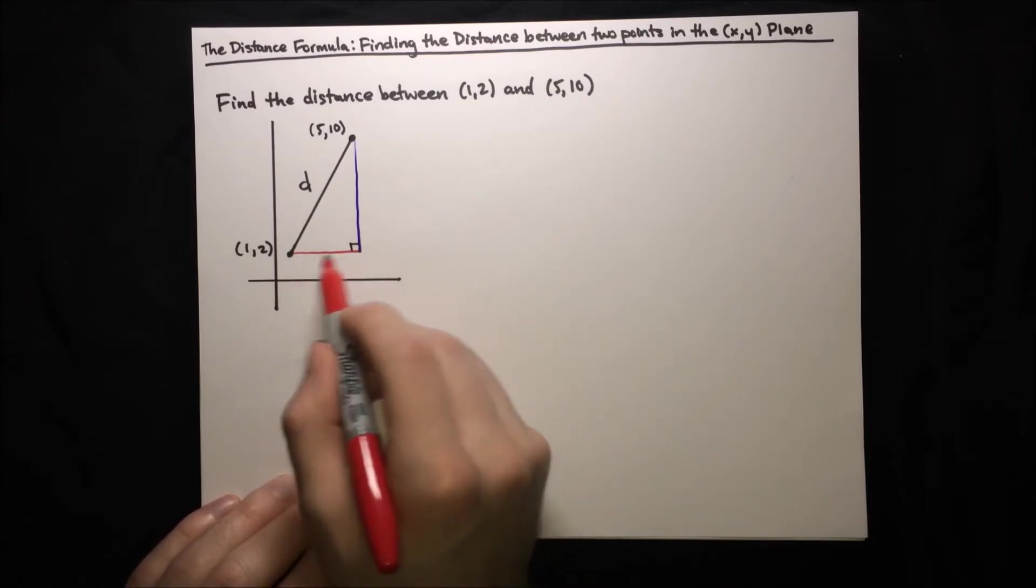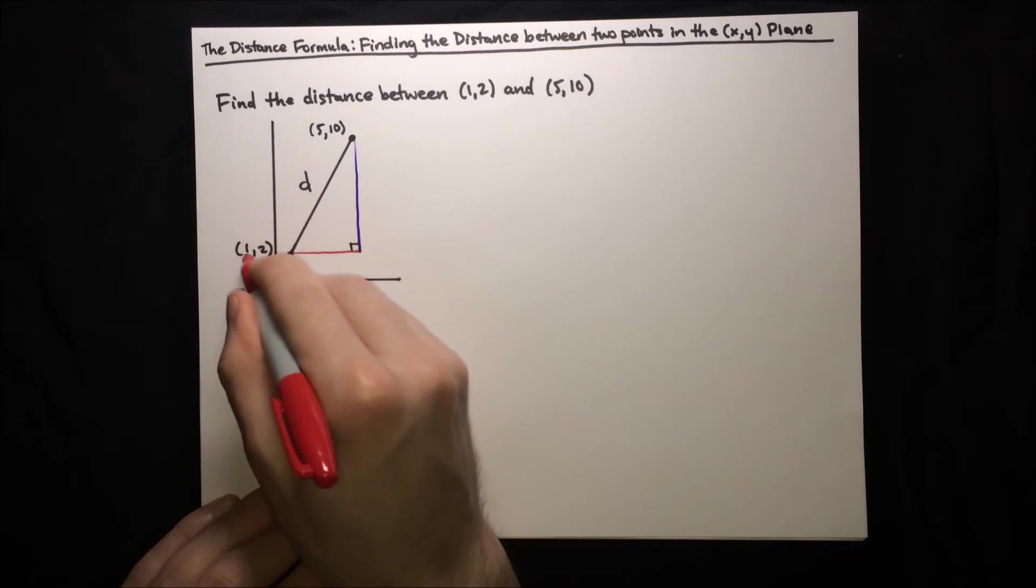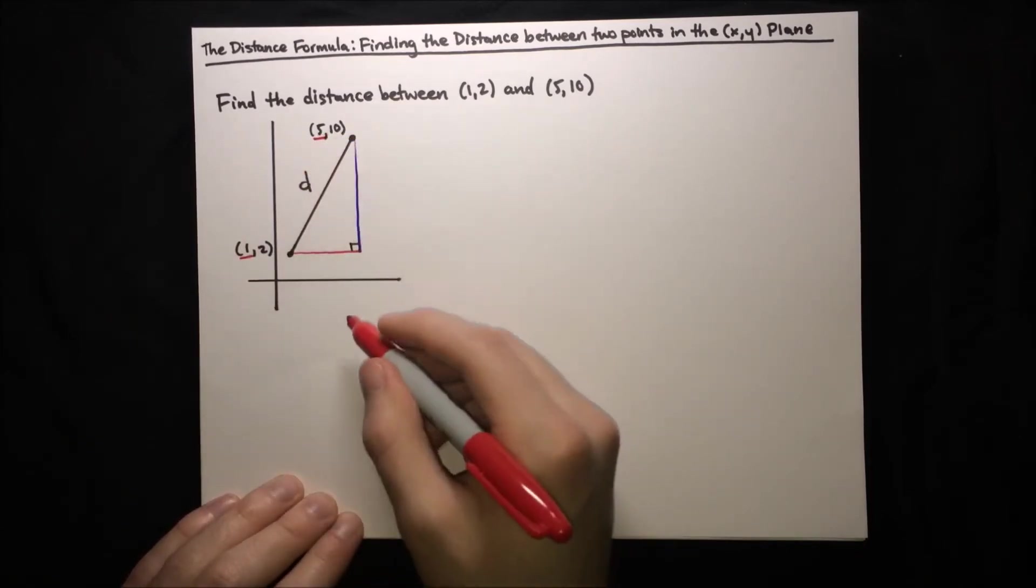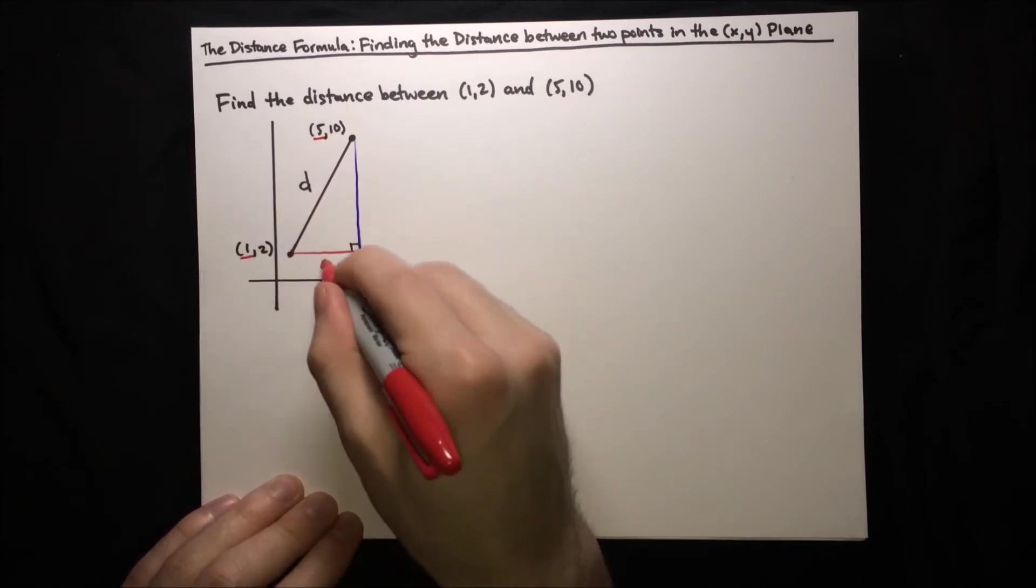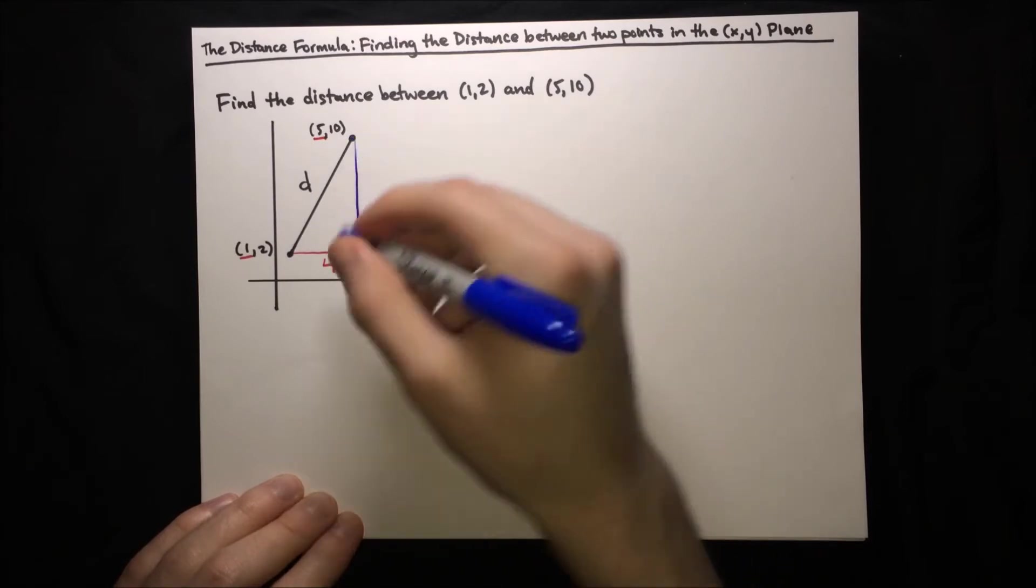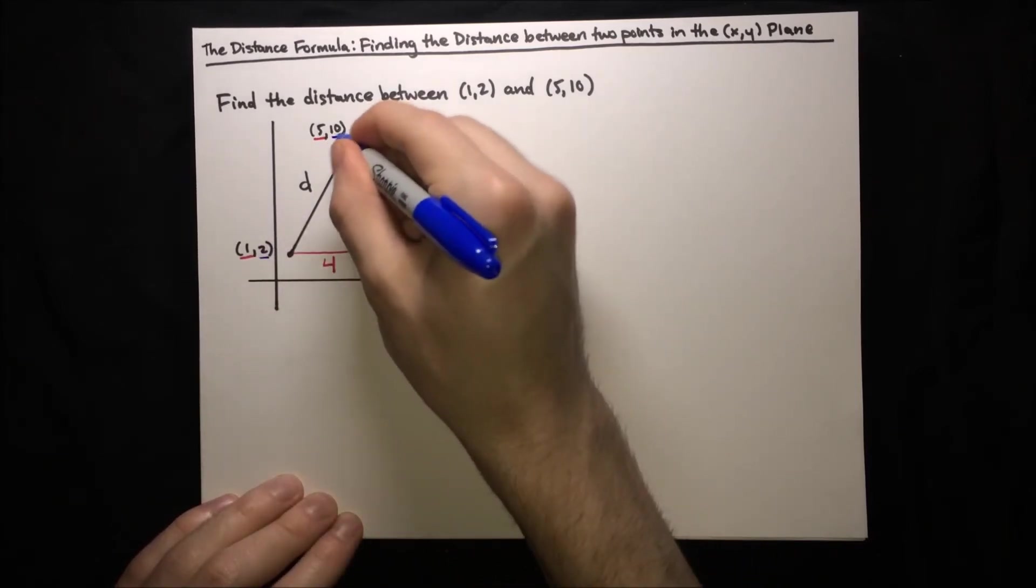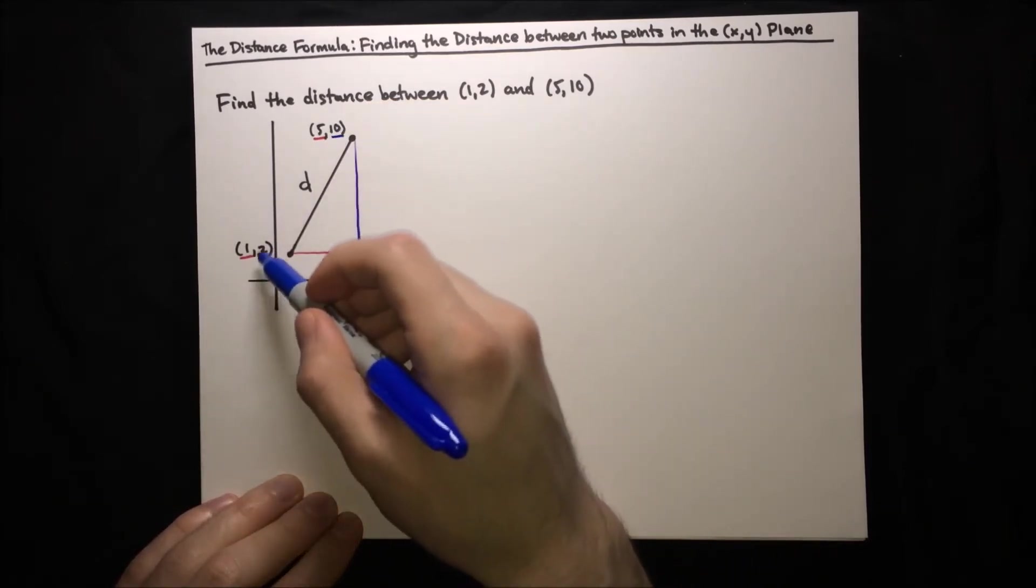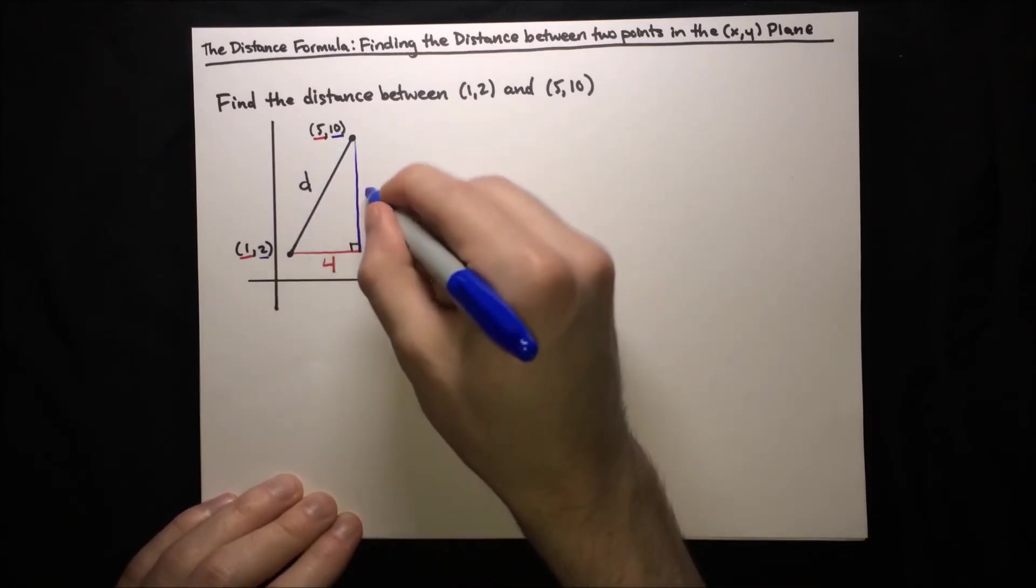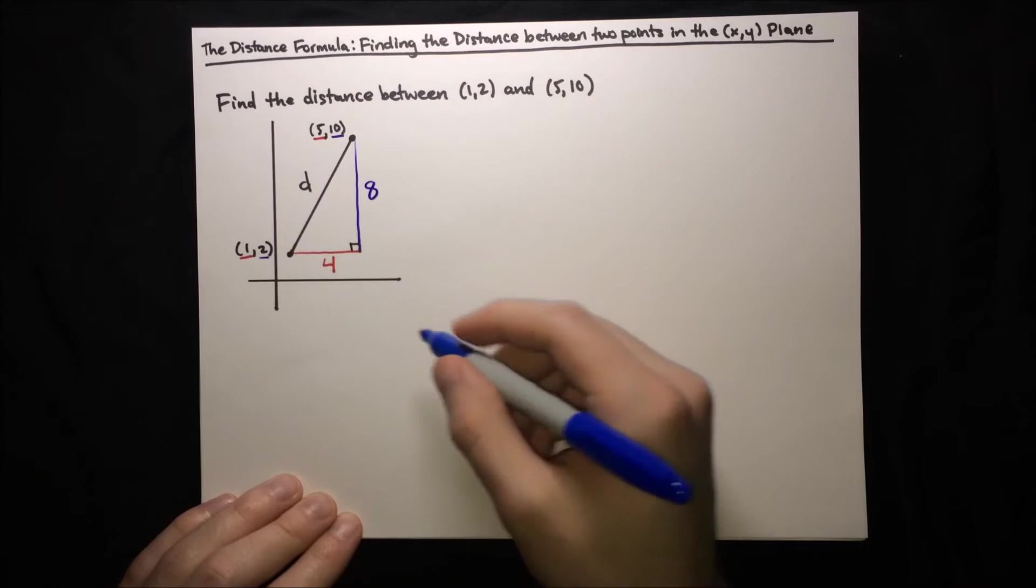This horizontal distance is just the distance in the x direction. So how far do we go from 1 to 5? Well, 5 minus 1 is 4. And then the vertical distance is in the y direction, so we look at the y coordinates. How far do we go from 2 to 10? Well, 10 minus 2 is 8.